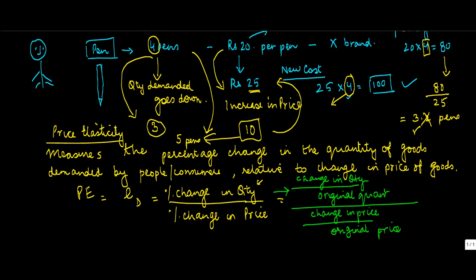Now, if I were to apply this to the current example, what is the change in quantity? Let's say, my quantity changed from 4 to 3. So, actually, it will be 3 minus 4, upon original quantity was 4, or 1 by 4.